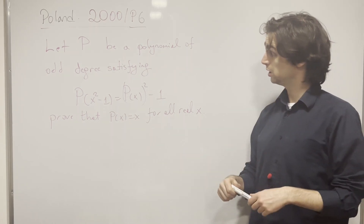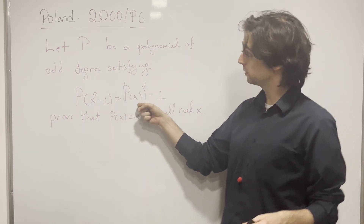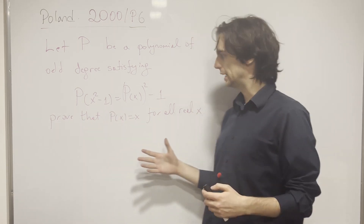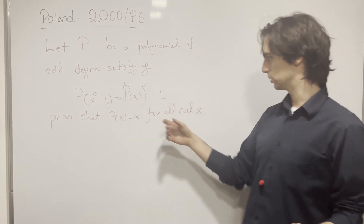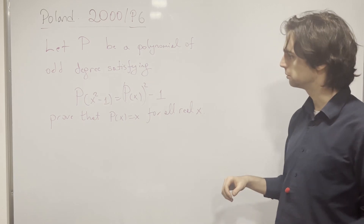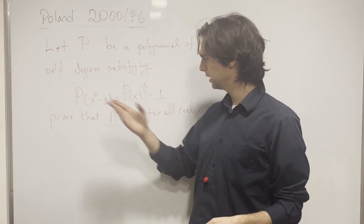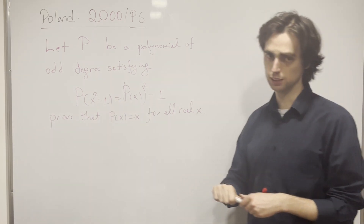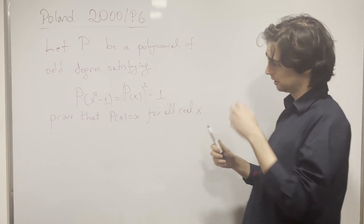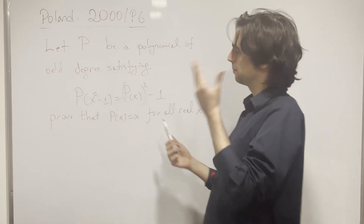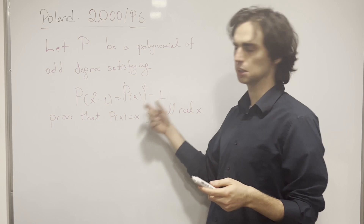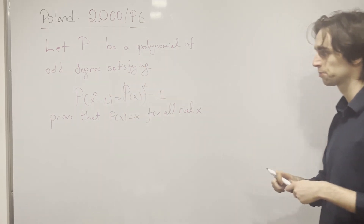So we want to prove that the only polynomial — a polynomial in real numbers, because we're looking at this for all real x — that satisfies this equation is P(x) = x. It makes sense: if P(x) was x, then this would be x squared minus 1 equals x squared minus 1, and we'd be good.